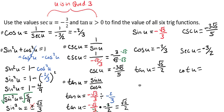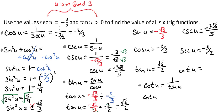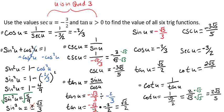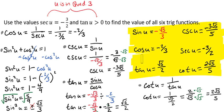Finishing up, we need cotangent. Using the reciprocal property, cotangent of u equals 1 over tangent of u, so cotangent of u equals 1 over radical 5 over 2, which becomes 2 over radical 5. Rationalizing gives us 2 radical 5 over 5. Now we have found all six trig functions using just identities, and we're finished.